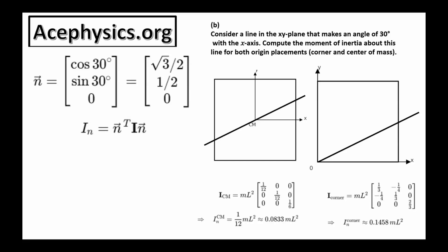And the final part of this question part B asks us consider a line in the xy plane that makes an angle of 30 degrees with the x-axis. Compute the moment of inertia about this line for both origin placements. Here's a line that makes the 30 degree angle with this x-axis. The question asks us to compute the moment of inertia of this plate about each one of these lines.